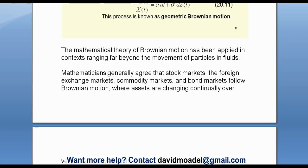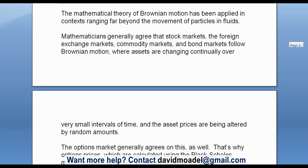The mathematical theory of Brownian Motion has been applied in contexts ranging far beyond the movement of particles in fluids. Mathematicians generally agree that stock markets, the foreign exchange markets, commodity markets, and bond markets follow Brownian Motion, where assets are changing continually over very small intervals of time and the asset prices are being altered by random amounts — in other words, constantly moving small amounts pretty much randomly.